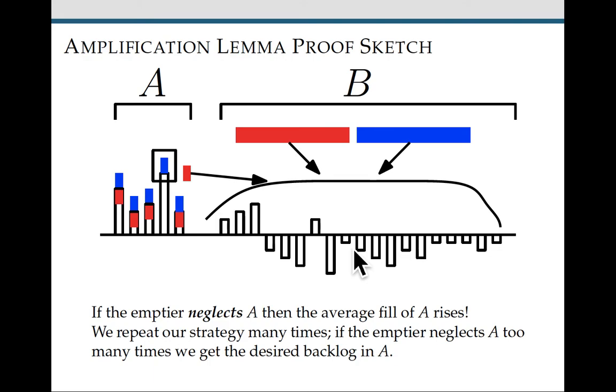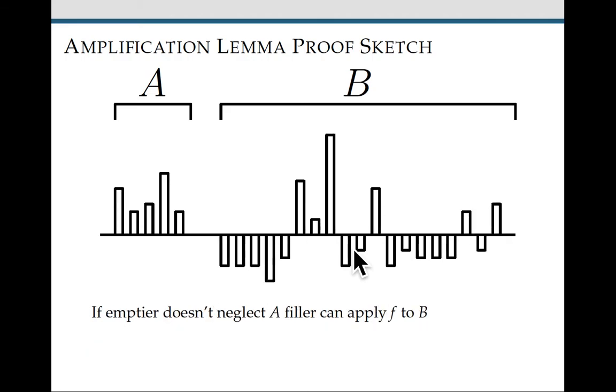And by repeating this process enough times, we're going to get, in particular, 1 minus delta f of n, 1 minus delta fill.